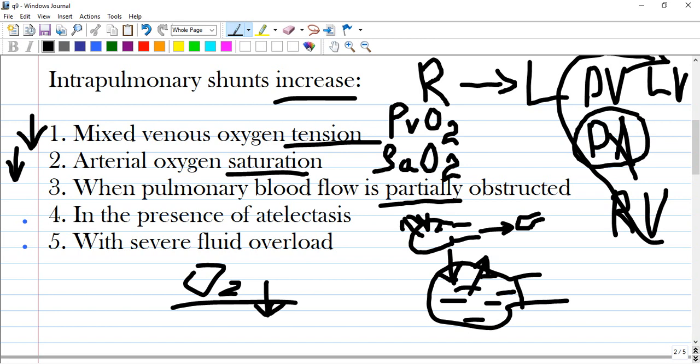Mixed venous oxygen tension is also called PVO2. And it usually decreases, not increases, in pulmonary shunt. As in pulmonary shunt, diffusion of oxygen and oxygenation to the blood is decreased. And of course, level of oxygen decreases, decreased tension and decreased saturation.